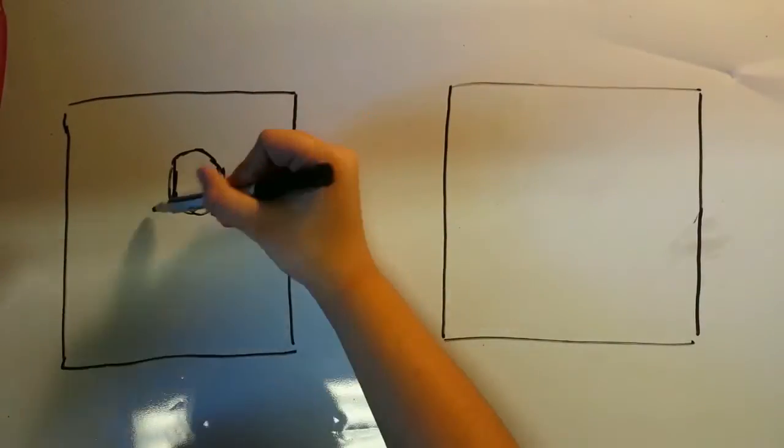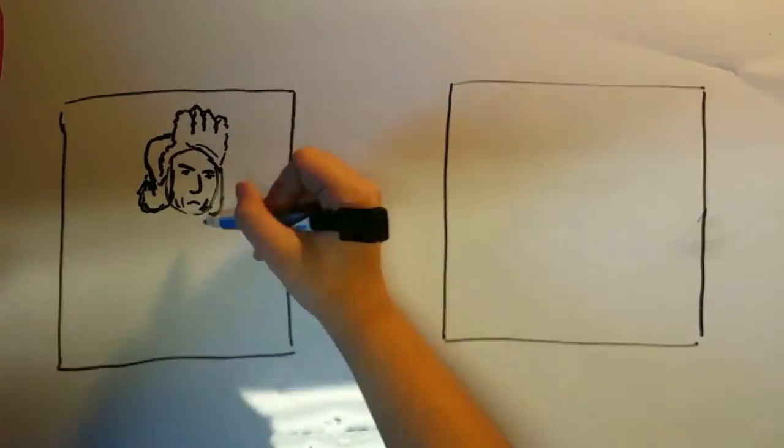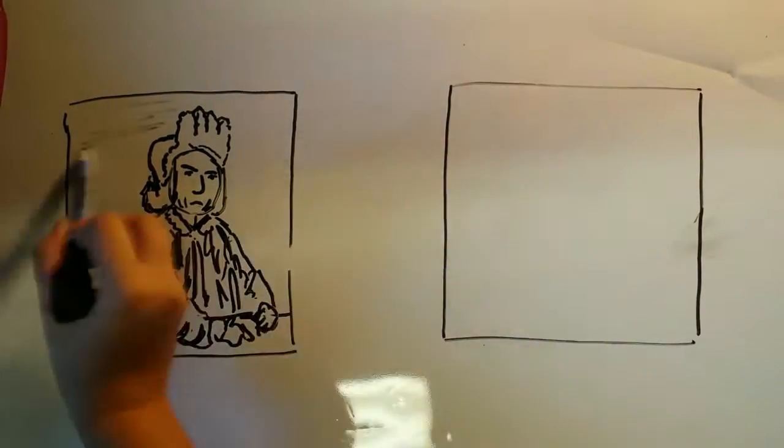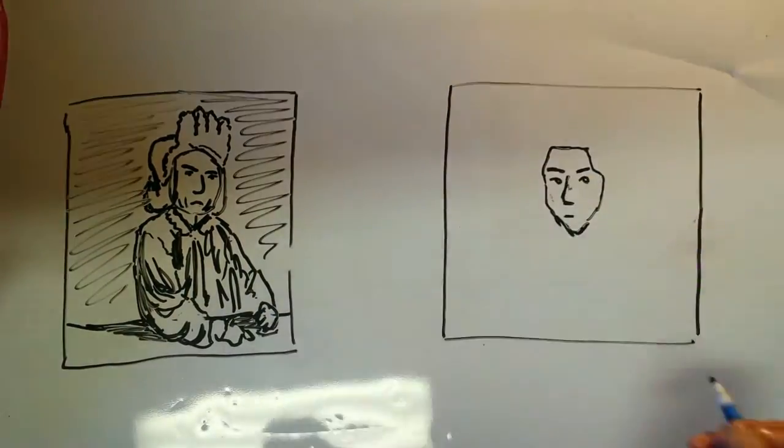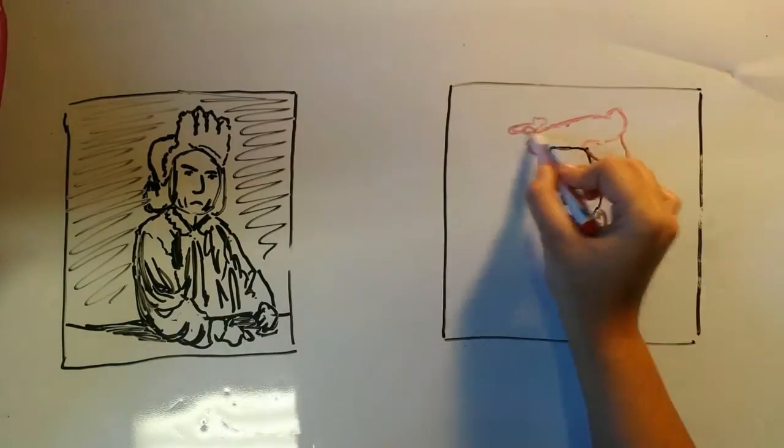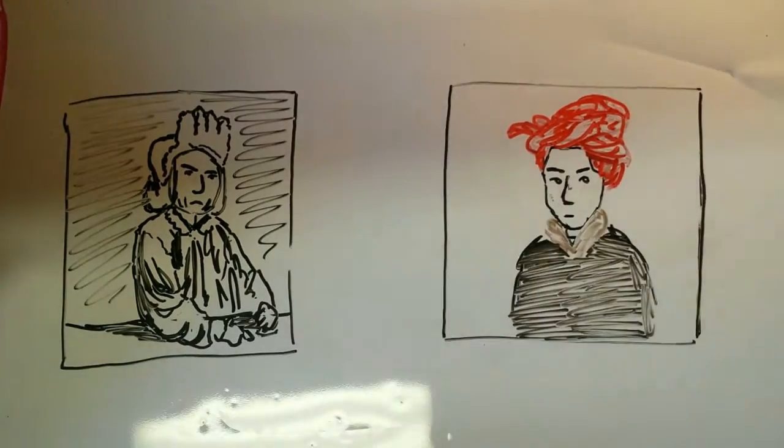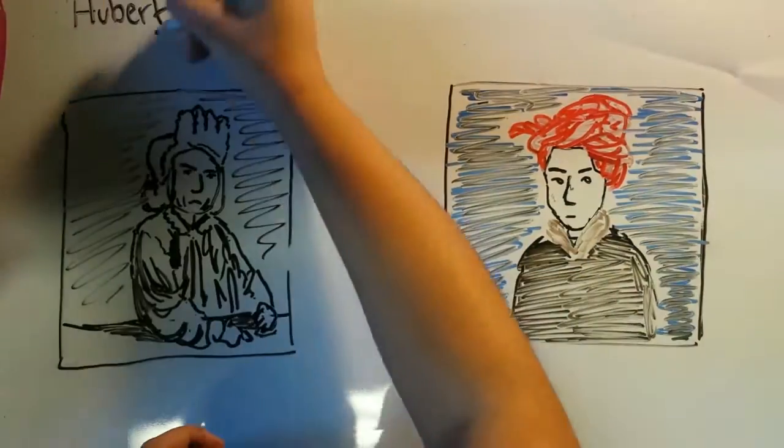It does seem like an exaggeration to claim that one piece of art can be the most influential piece of its time and still to this day. However, the painting created by Hubert van Eyck, then finished by Jan van Eyck, definitely exceeds the expectations of this title. Just to give you some insight into how powerful this piece was, let's talk about a little history.